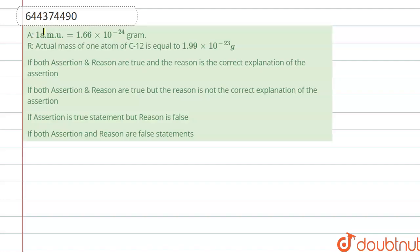A session and region are given. Assertion states that 1 amu is equal to 1.6 × 10⁻²⁴ gram, and the reason states that the actual mass of one atom of carbon-12 is equal to 1.99 × 10⁻²³ gram. So let's see — we know that 1 amu is equal to...